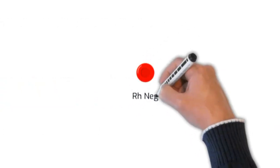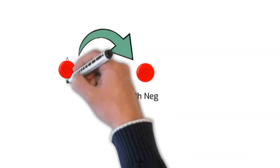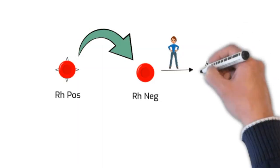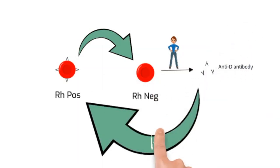If an RH negative red blood cell is exposed to an RH positive one, the body of the RH negative red blood cells will produce antibodies called anti-D antibodies. Those antibodies can attack the RH positive red blood cells and cause problems.